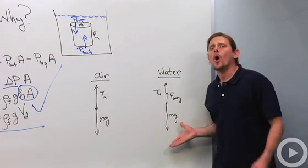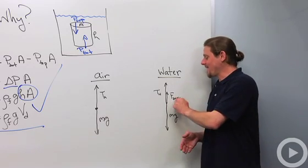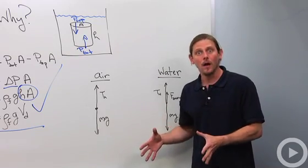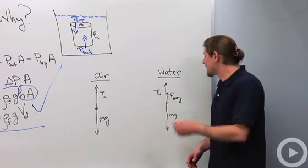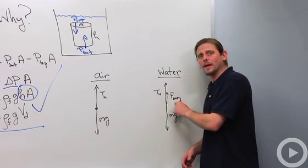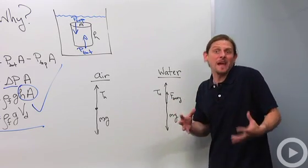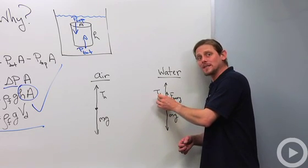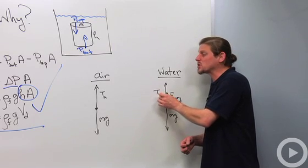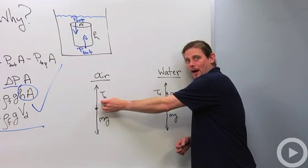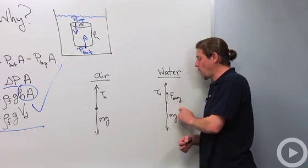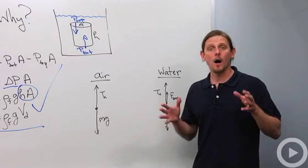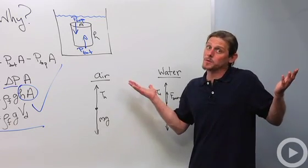When I weigh it in water, there's now a buoyant force, and this buoyant force depends on the volume of the crown and the density of water. So the buoyant force contains information about the density. The tension — the apparent weight of the crown in water — will be smaller than its weight in air, and that difference is the buoyant force. That buoyant force contains information I can extract about the density of the crown. And that's Archimedes' principle.